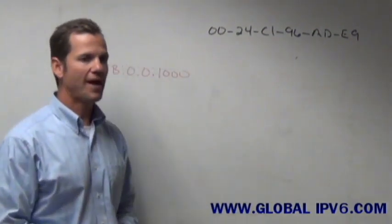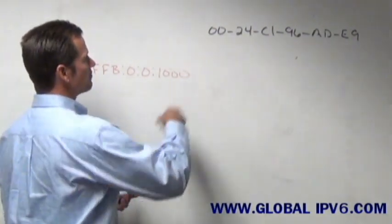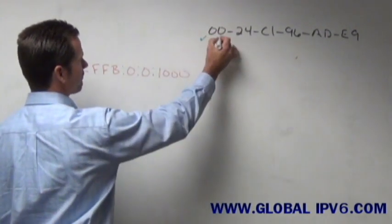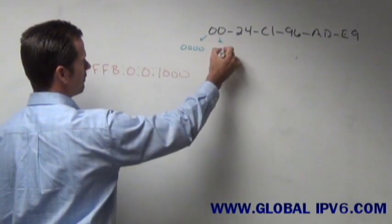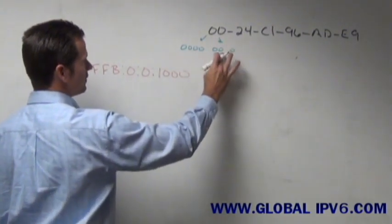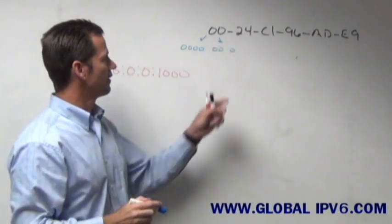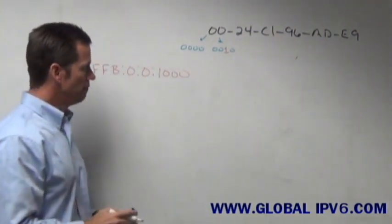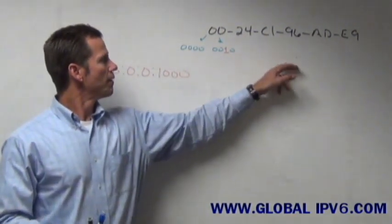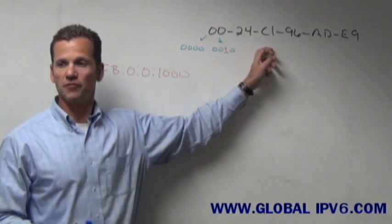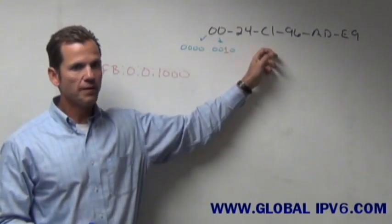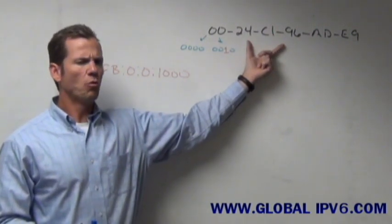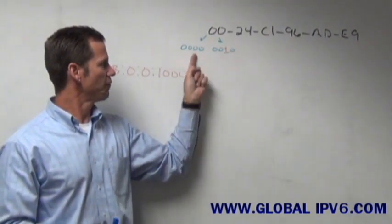To do this, what's going to happen is the host by default, since its MAC address came off of the ethernet card, what the host is going to do is it's going to take the first 8 bits and it's going to change the second to the least significant bit here from a 0 to a 1. All your operating systems across the board will do this when the host gets the address off of its ethernet card. So when it flips the second to the least significant bit, I'm left with a 02.